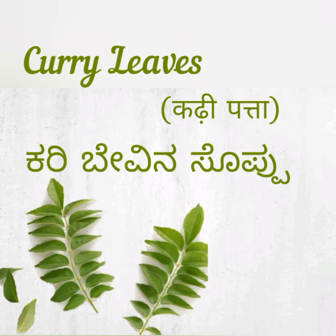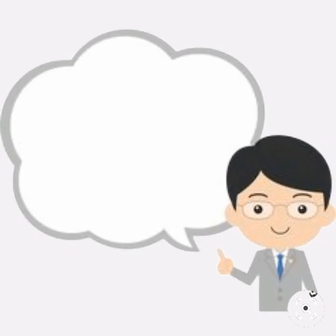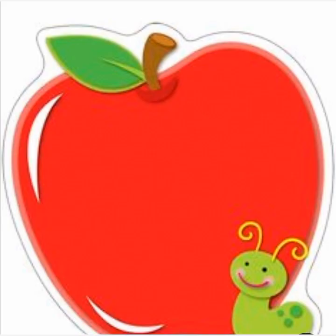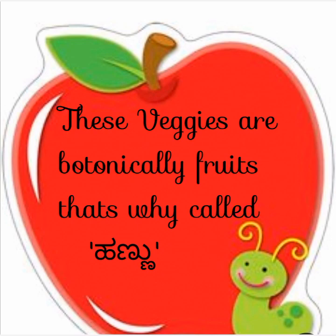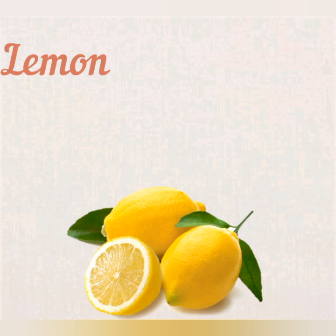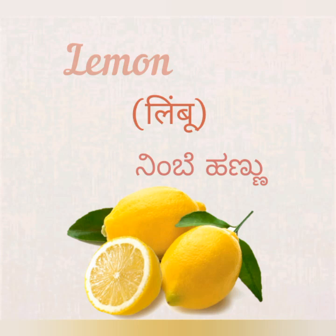Let's learn the vegetables which end with the word hannu. Usually, fruits are called hannu, but these vegetables are botanically fruits as they have seeds in them. Lemon — nimbe hannu. Tomato — goodi hannu or tomato.